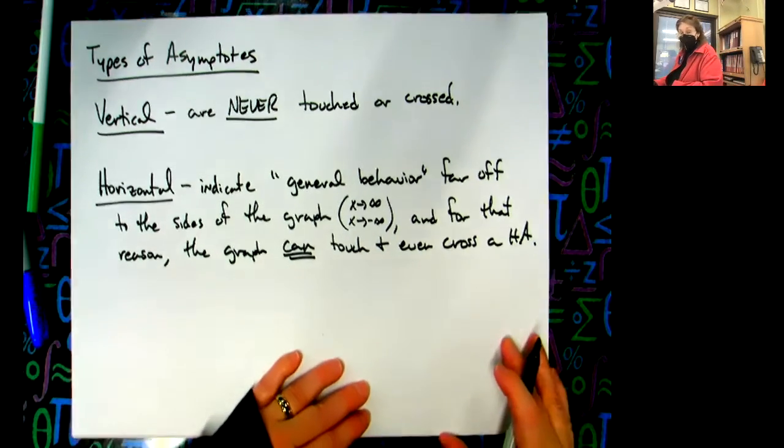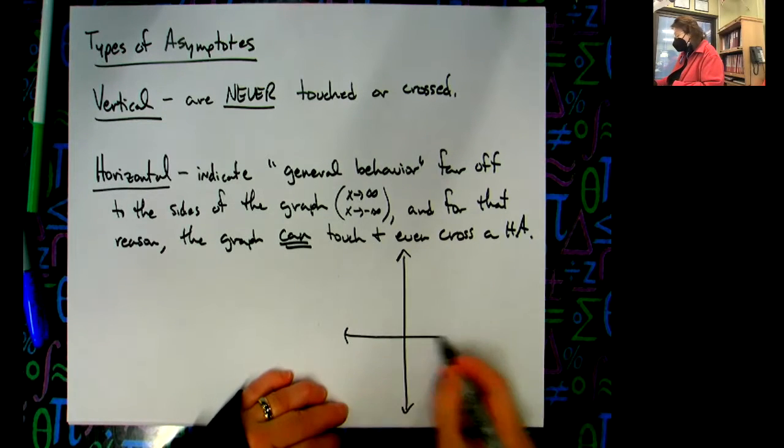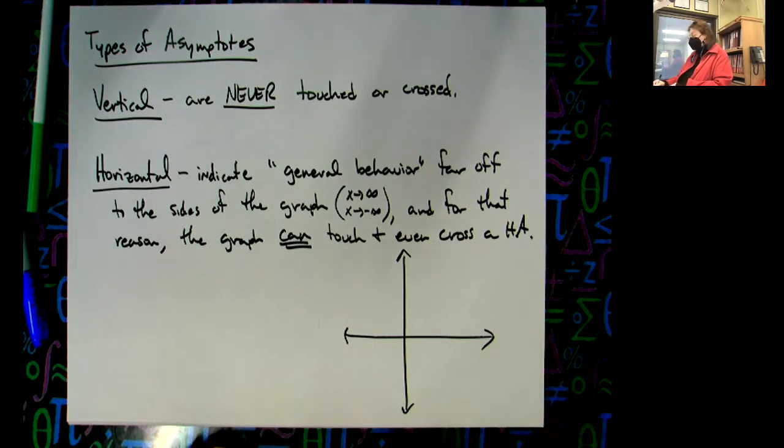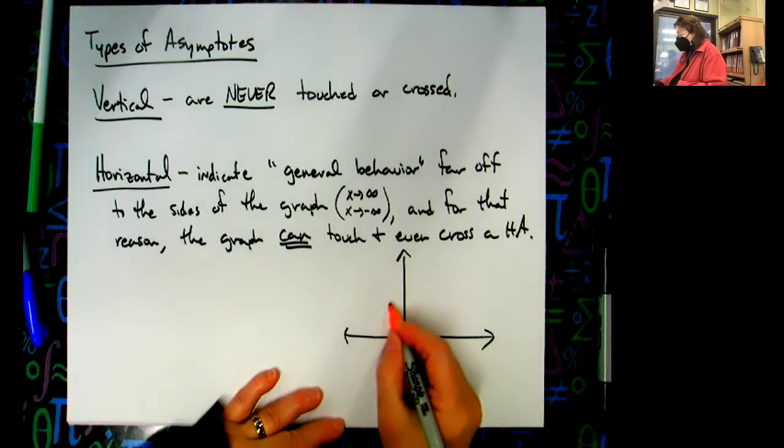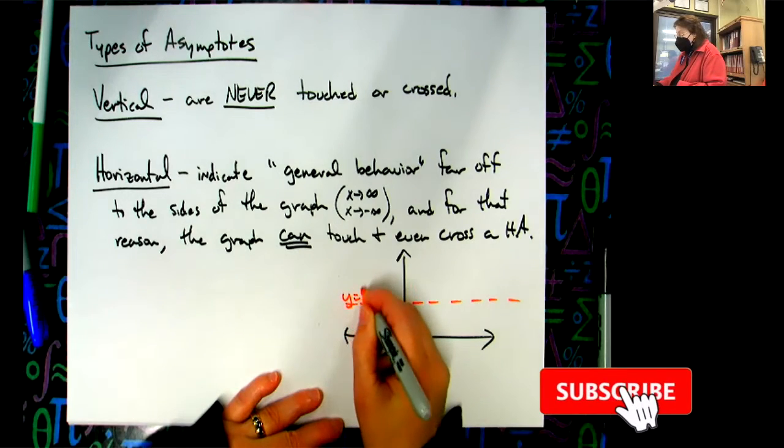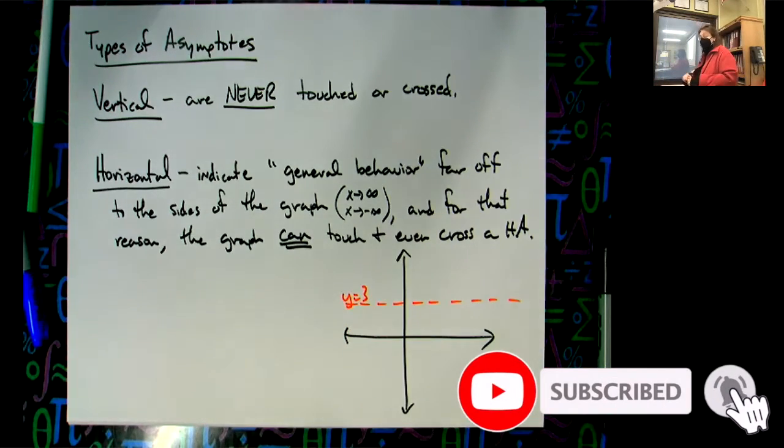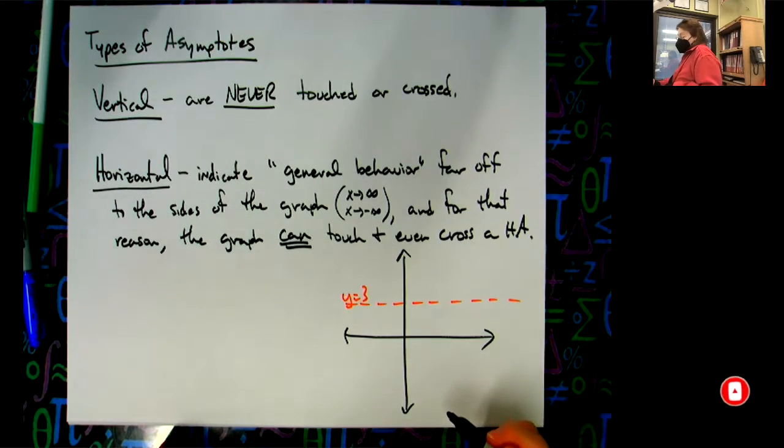So down here in the corner, I'll do a little sketch. It'll be a bad sketch, but let's suppose that there's a horizontal asymptote at about y equals three for this graph. I'm putting that on there because it's going to be easier to draw the asymptote first.